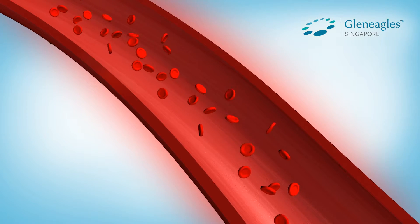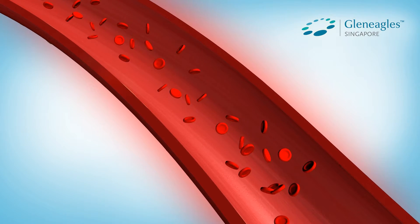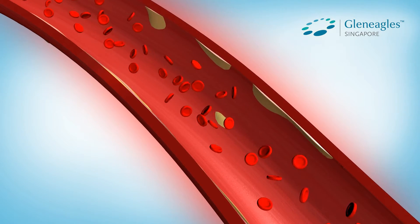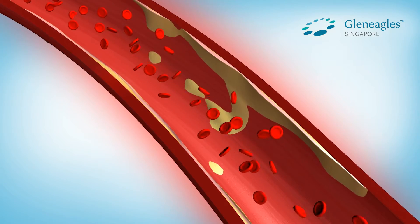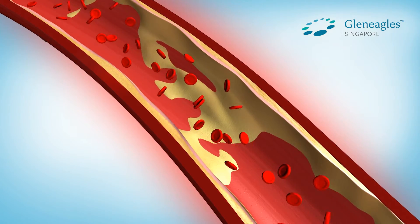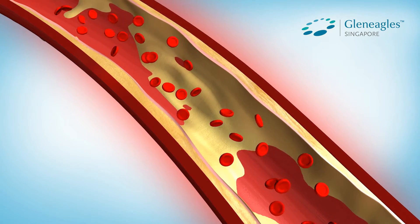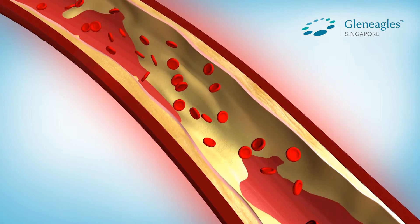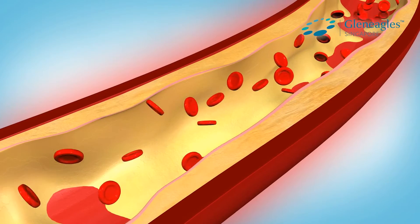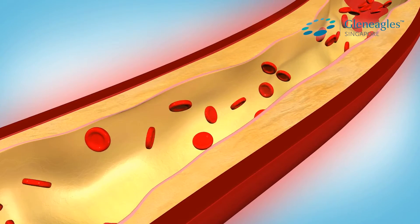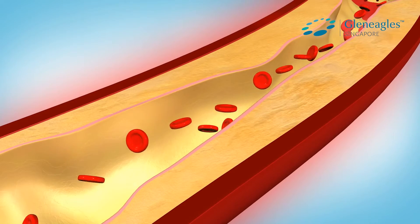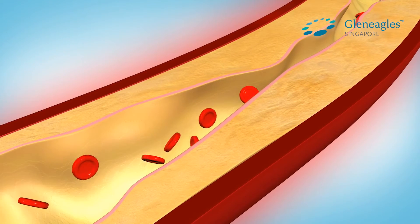Coronary artery disease is the narrowing or blockage of the coronary arteries, usually caused by atherosclerosis. Atherosclerosis is the build-up of cholesterol, calcium, and fatty deposits — also known as plaque — in the inner walls of the arteries. As plaque builds up in the coronary arteries, blood flow is restricted and the heart may not get the blood it needs to work well.